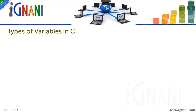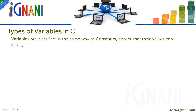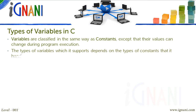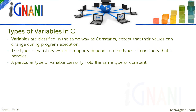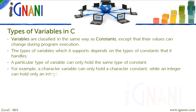Types of variables in C: Variables are classified in the same way as constants, except that their values can change during program execution. As with any language, even in C, the types of variables it supports depends on the types of constants it handles. A particular type of variable can only hold the same type of constant. For example, a character variable can only hold a character constant, while an integer can hold only an integer constant, and the same applies for real variables.